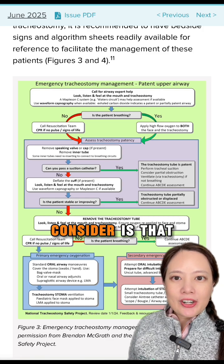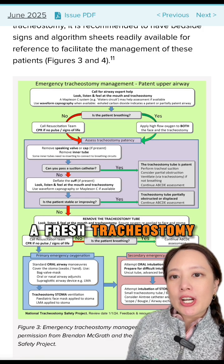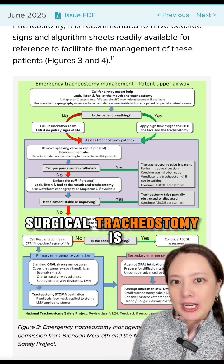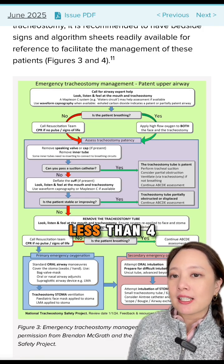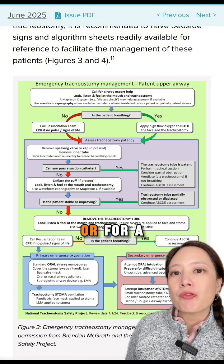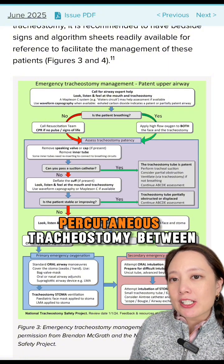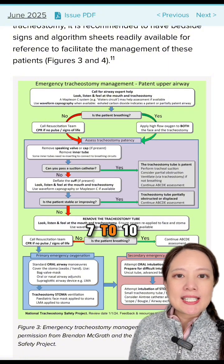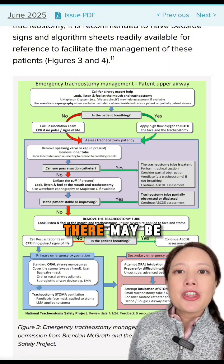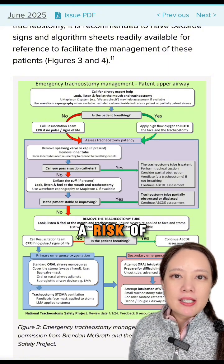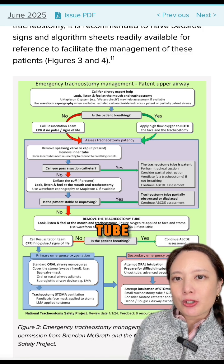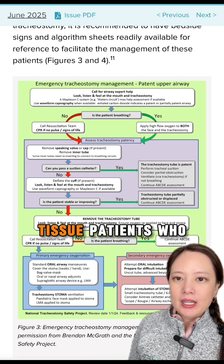One thing to consider is that a fresh tracheostomy — which for surgical tracheostomy is less than four days, or for percutaneous tracheostomy between seven to ten days — there may be a risk of inadvertently advancing the tube into the subcutaneous tissue.